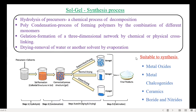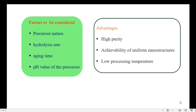The numerous types of materials prepared by the sol-gel process are nanoparticles of metal oxides, metal chalcogenides, ceramics, borides, and nitrides. The important factors to be considered in the sol-gel process are the nature of the precursor, rate of hydrolysis, aging time, and pH of the precursor materials. The advantages of sol-gel methods are listed as high purity, achievability of uniform nanostructures, and low processing temperature.